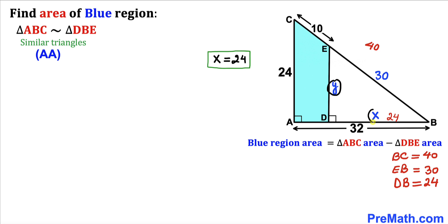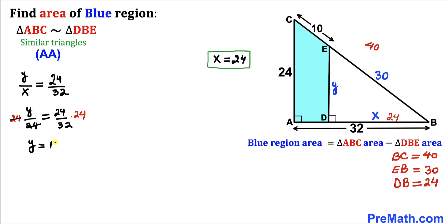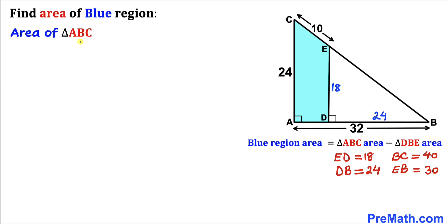Now let's focus on another ratio: y/x = 24/32. Since x = 24, we have y/24 = 24/32. Multiplying both sides by 24 to isolate y, and simplifying the right-hand side gives us 18 units. Therefore length ED equals 18 units, which is our y value.